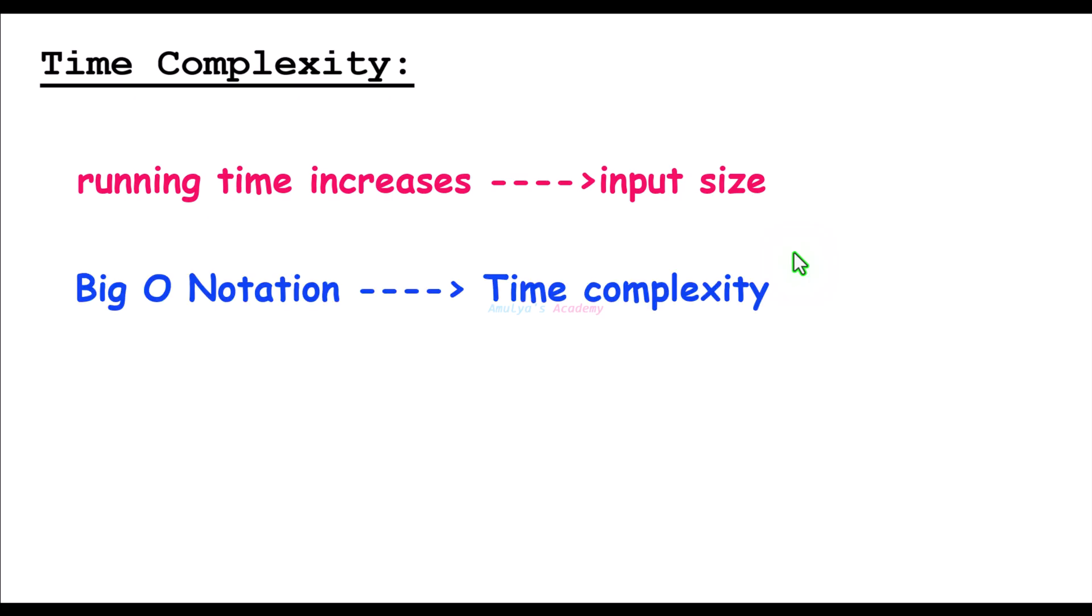We use Big O notation to describe time complexity. It is a mathematical notation used in computer science to describe the efficiency of an algorithm. Big O notation is a way to describe the upper bound or worst case performance of an algorithm as the input size grows.